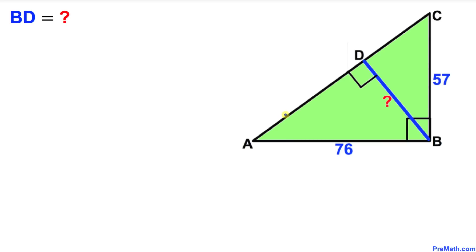Welcome to pre-math. In this video tutorial, we have got this right triangle ABC with side lengths 57 and 76, as you can see in this figure. Moreover, we have got this line segment BD that is perpendicular on side AC.